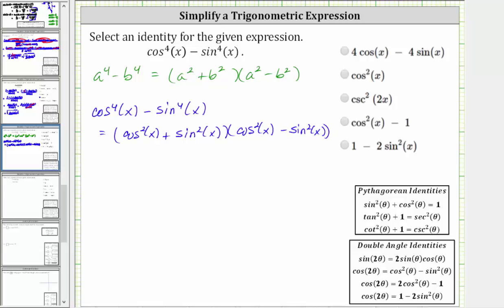From here, we should recognize that cos^2(x) + sin^2(x) equals one, using the Pythagorean identity shown below. Therefore, the expression simplifies to cos^2(x) - sin^2(x).